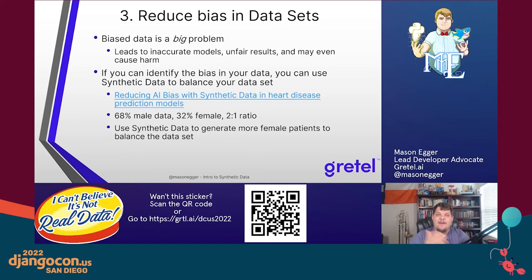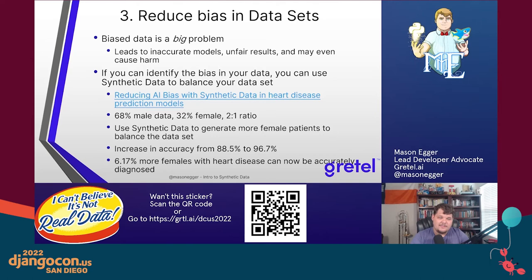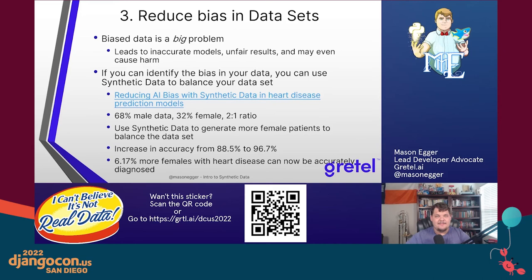We were able to use synthetic data to generate more female patient data to balance the data set — from 68/32 to a 50/50 split, no longer biased or skewed. This allowed us to increase the accuracy of the model from 88.5% to 96.7% in predicting heart disease, which in turn led to 6.17% more females with heart disease being accurately diagnosed. Interestingly, the male prediction rate also rose, because the model was now regularized — it knew exactly what happens when you have a given set of parameters, rather than guessing.